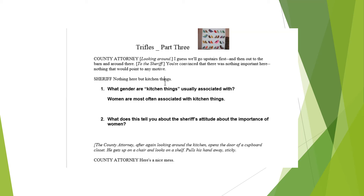The stage directions then tell us the county attorney opens the door of a cupboard closet, gets up on a chair, looks on a shelf, and pulls his hand away — sticky. He says, 'Here's a nice mess.' The stage directions tell us what the actors are doing and give information about the setting and characters. He's examining the house of the woman accused of murdering her husband, and this detail gives evidence she either left very quickly without warning or kept a messy house, because it's actually sticky up there — pretty gross.